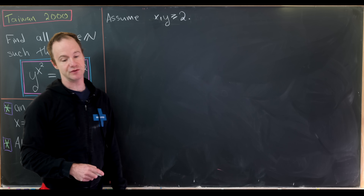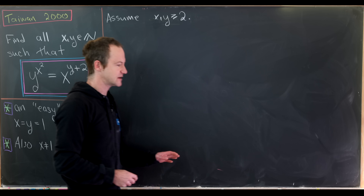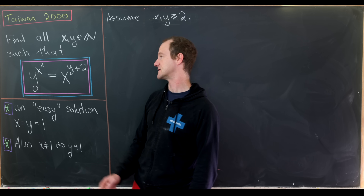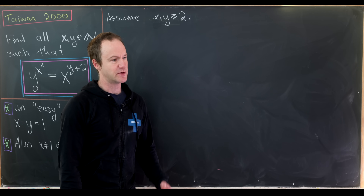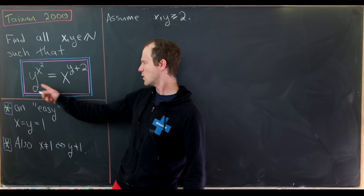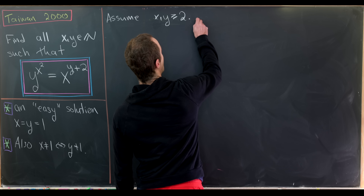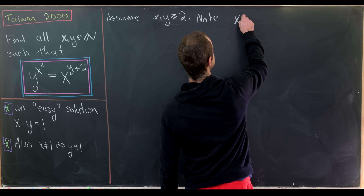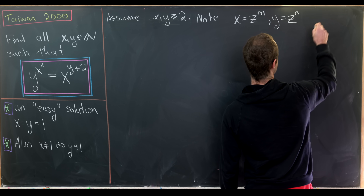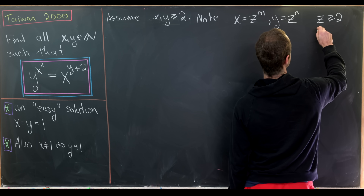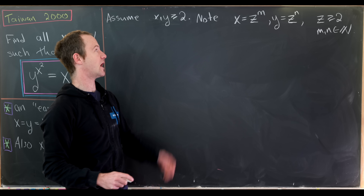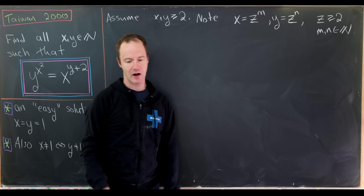For the rest of the solution we assume x and y are bigger than or equal to 2. Notice that the left-hand side has base y and the right-hand side has base x, so x and y must both be pure powers of the same number. We let x equal z to the m and y equal z to the n, where z is bigger than or equal to 2 and m, n are natural numbers.